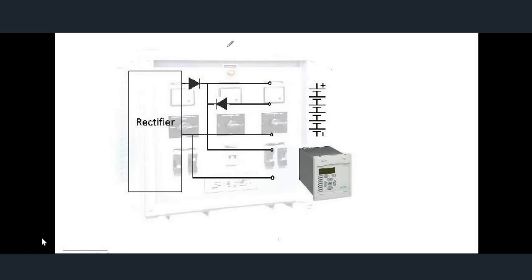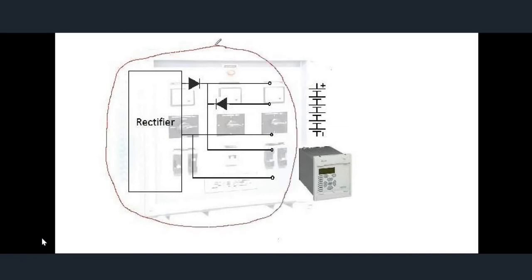What is inside a charger? If you consider this whole unit, it's a charger. Inside the charger there is a rectifier with a filter circuit. The input to the rectifier is AC and the output is DC — this is the positive terminal and this is the negative terminal of the rectifier. The battery and the load are both directly connected to the output of the charger. This output of the rectifier is directly connected to a diode in forward bias direction. This diode is used to block the flow of current from the battery towards the charger when there is no AC supply.